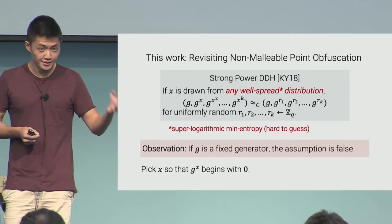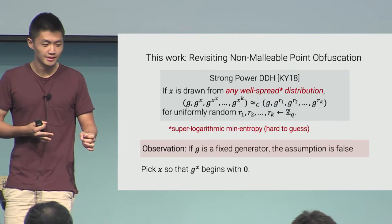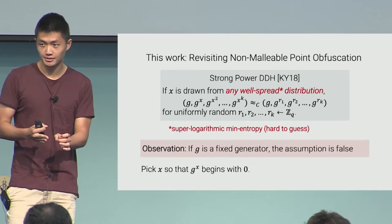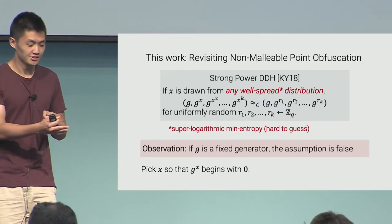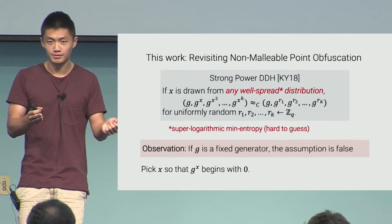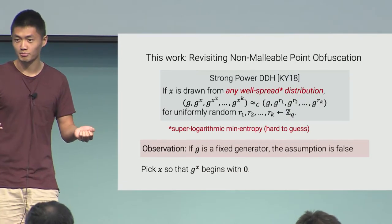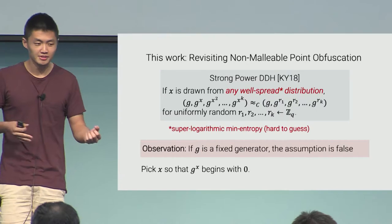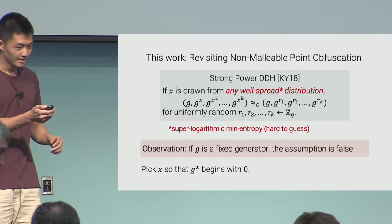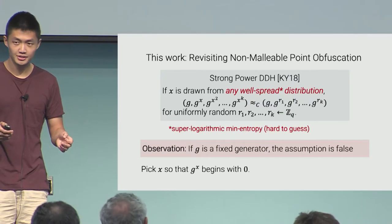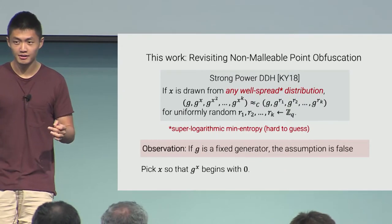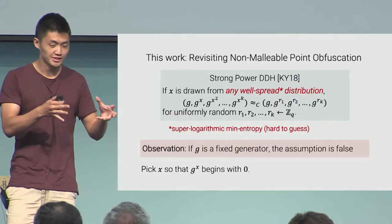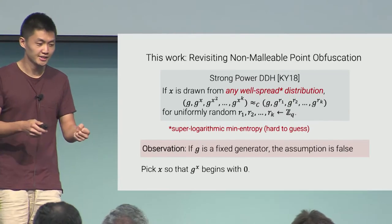If the generator is a fixed generator, the assumption is actually false, for a sort of silly reason. When we're quantifying over all well-spread distributions, we have to consider distributions that condition on the choice of G. If a distribution can condition on the choice of G, you can simply pick an X randomly such that G^X begins with a zero — this is trivially distinguishable from a random group element, and you don't even need to use the higher powers. So the assumption is false when the generator is fixed, and when the generator is random it's not obviously false. But if you look closely at the KY18 construction, you'll realize that you actually have to use a fixed generator — if you try to switch to a random generator, an adversary can maul it — and putting the random generator in a CRS means the result was already known in the CRS setting.